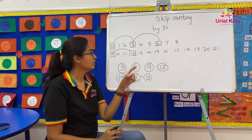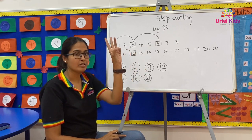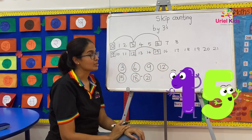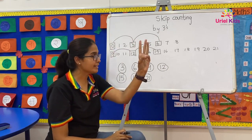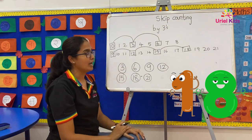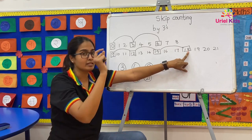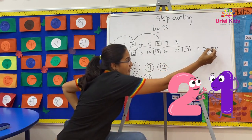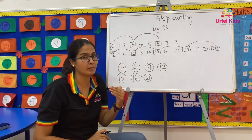Now I am standing on number twelve. Thirteen, fourteen, fifteen — I will be jumping on number fifteen. Next, sixteen, seventeen, eighteen — I will be jumping on number eighteen. Now standing on eighteen: nineteen, twenty, twenty-one — I will be jumping on number twenty-one. This will continue. So this is how we do skip counting by threes.